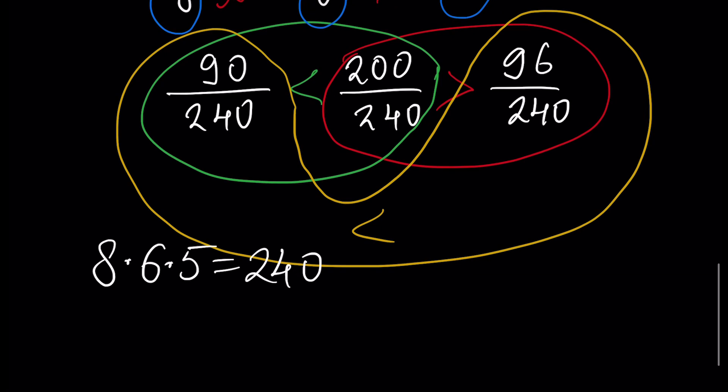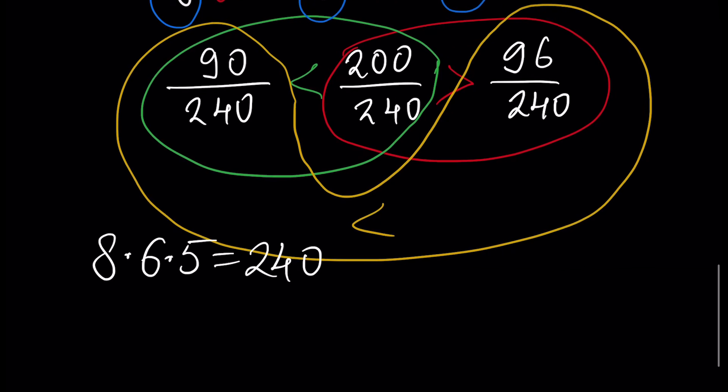Often finding the common denominator this way is easy, but the denominator can be too big. We can find a common denominator that is less than 240 by using the least common multiple. If you don't know what the least common multiple of several numbers is, watch previous tutorials. Let's solve this example using the least common multiple.